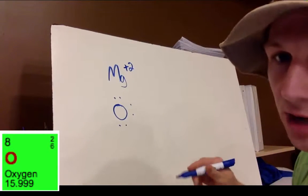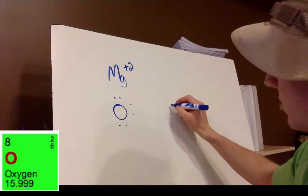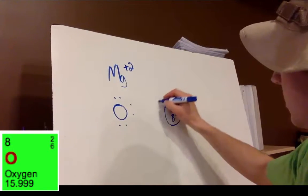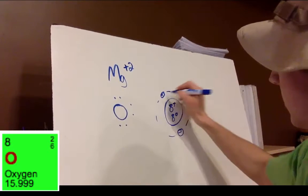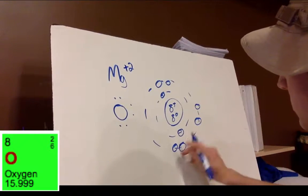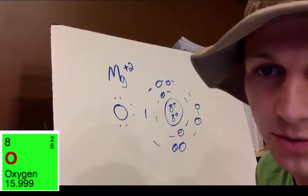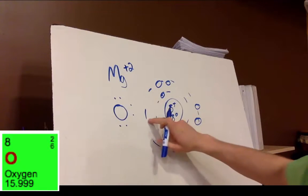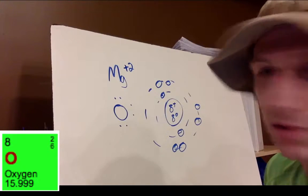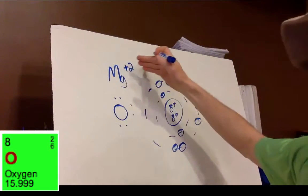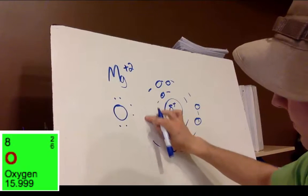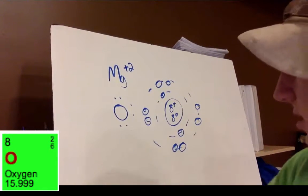Now let's do the same with oxygen. Oxygen is number eight on the periodic table. Its Bohr model has eight protons and eight neutrons. The inner shell holds two electrons, then the outer shell has one, two, three, four, five, six electrons. To be stable, oxygen can either pick up two electrons to fill its shell or get rid of six. The easier option is to pick up the two extra electrons.